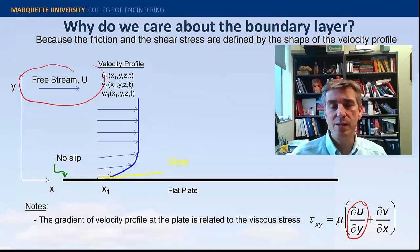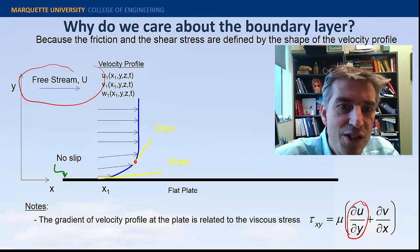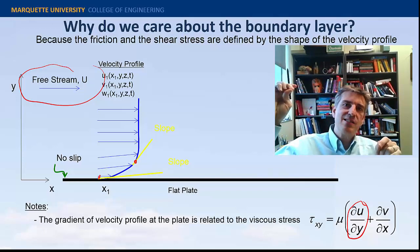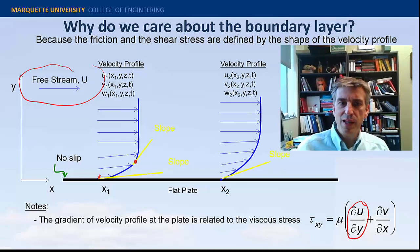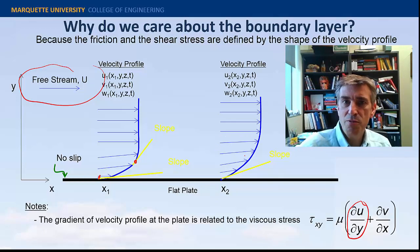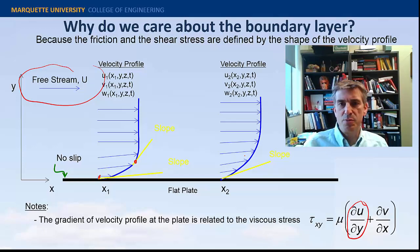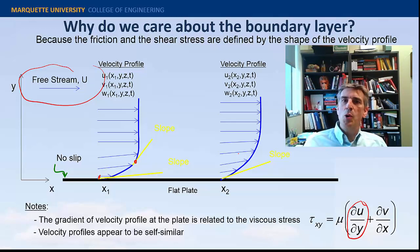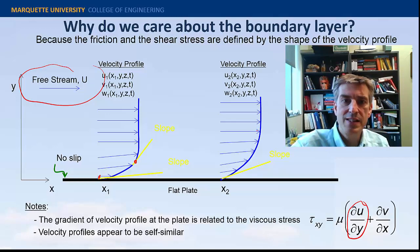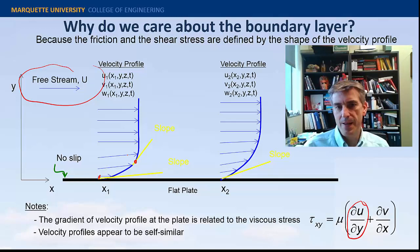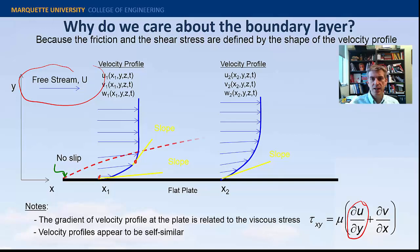That slope is shown here — specifically the slope at the plate, the wall shear stress. There are many slopes along the velocity profile, meaning shear stress at each location. Under really ideal conditions we would hope the velocity profile is self-similar, meaning I could stretch and squish one profile onto another. But that's not necessarily the case, so we'll keep our eye out for self-similar velocity profiles.